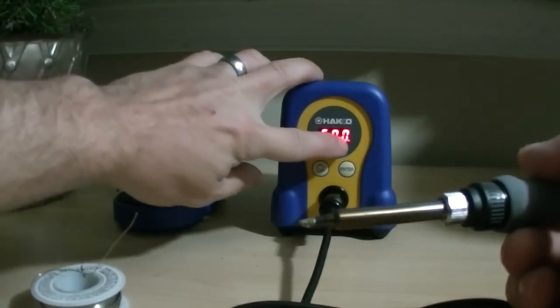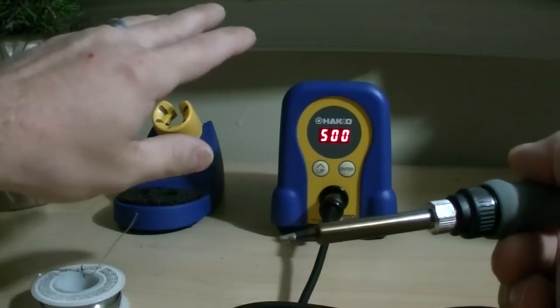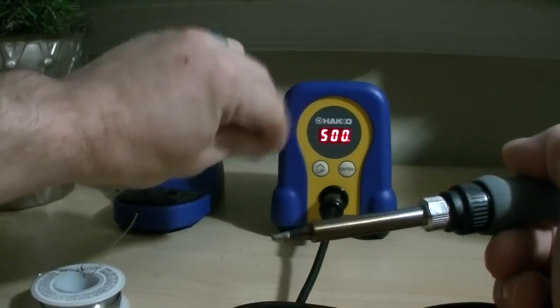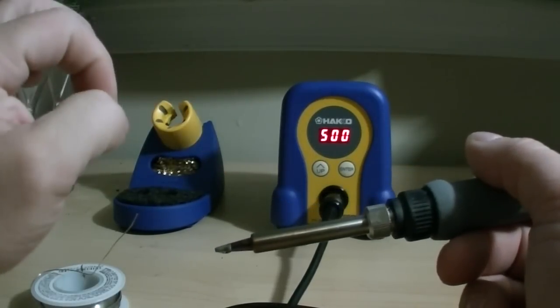You'll also notice in this far corner here this blinking light, and you would think it's blinking at a constant rate. It's not. That's actually telling you when the light is on, the heating element is on. So it's maintaining this temperature.